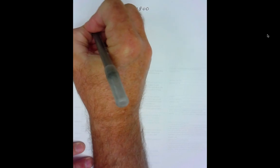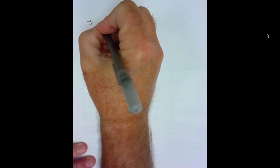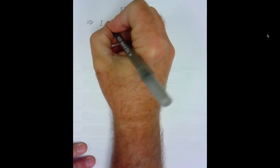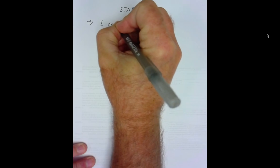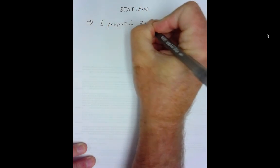Hi guys, Stat 1800. What's on the agenda today is a continuation of confidence intervals, but we're going to be looking at what's called a one proportion Z interval.